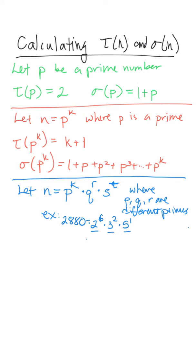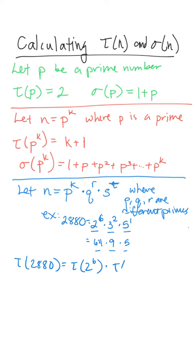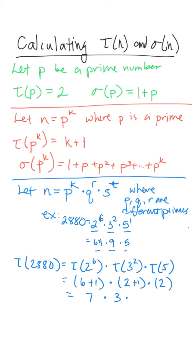Since 2 to the sixth is relatively prime to 3 to the second, and that's relatively prime to 5 to the first — another way to write this is 64 times 9 times 5, all relatively prime to each other. Then tau of 2880 is tau of 2 to the sixth times tau of 3 squared times tau of 5. Tau of 2 to the sixth is 6 plus 1; tau of 3 squared is 2 plus 1; tau of 5 is just 2 because 5 is prime. So we get 7 times 3 times 2, which is 42.